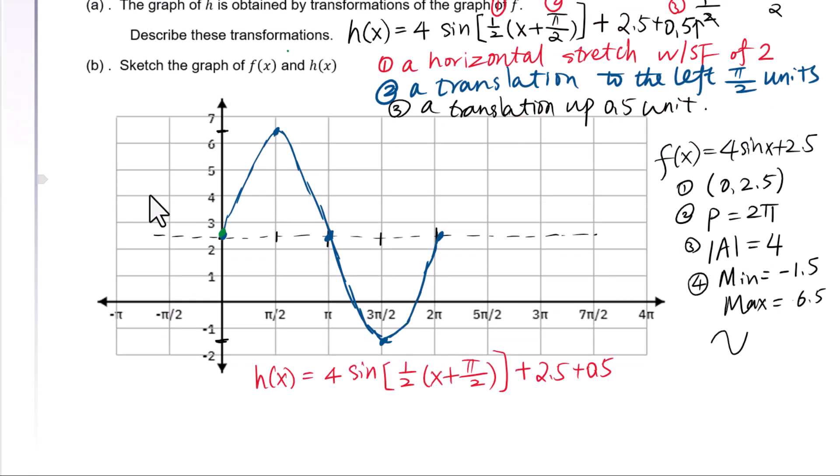Let's check this transformation. A horizontal stretch with a scale factor of 2 means your x-coordinate in f times 2. A translation to the left π/2 means minus π/2. For the y-coordinate, a translation up 0.5 units, so y + 0.5.